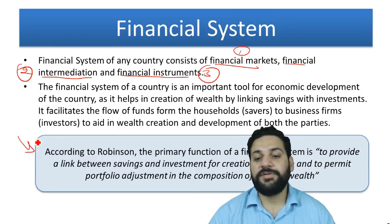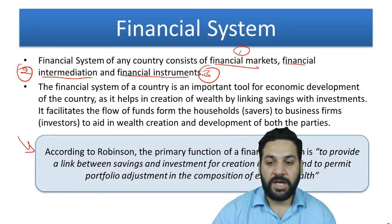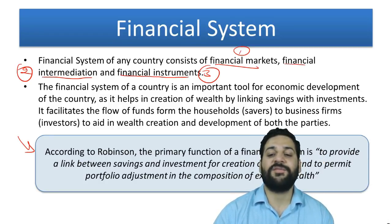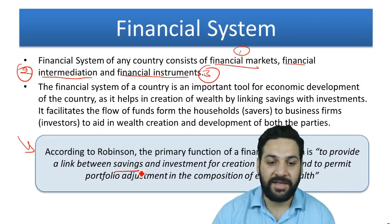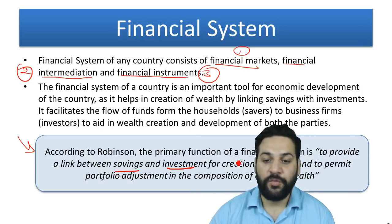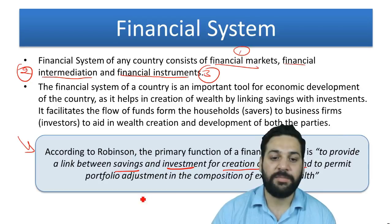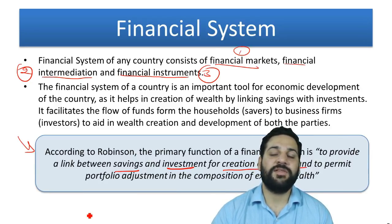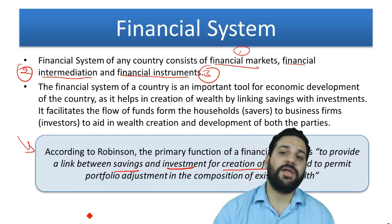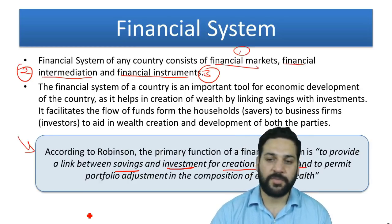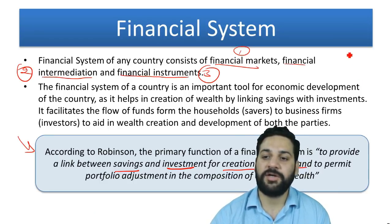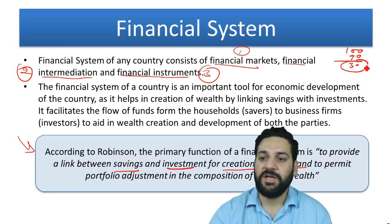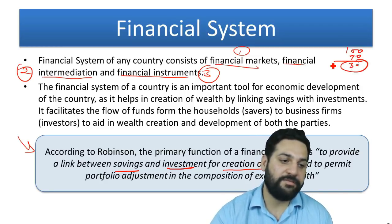According to Robinson, the primary function of a financial system is to provide a link between savings and investment for the creation of wealth, and to permit a portfolio adjustment in the composition of existing wealth. For example, suppose you earn 100 rupees a month and spend 70 rupees — the remaining 30 rupees you save in a bank.